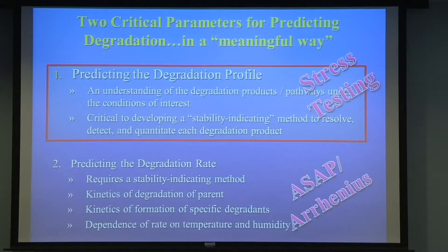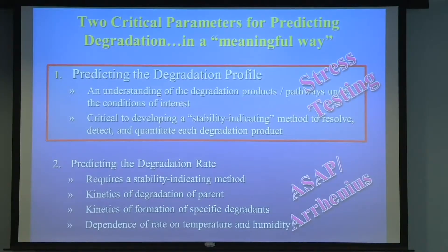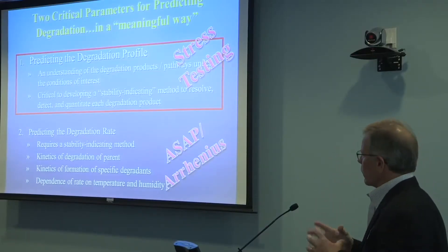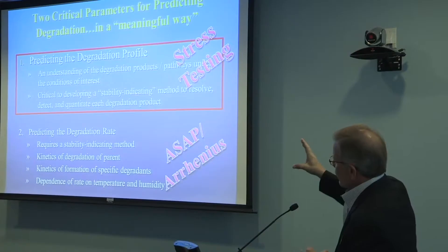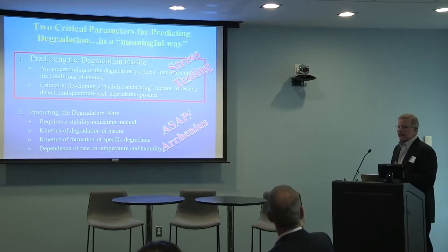I want to talk about the two critical parameters that are useful for predicting what degradation products are going to occur. One, you have to predict the degradation profile — that is, what are the compounds that could form from the available pathways to that particular molecule? The other is predicting the rate. You need to keep these separate in your mind — they're two different things. Predicting the degradation profile, which is founded on stress testing or forced degradation studies, is what is needed.